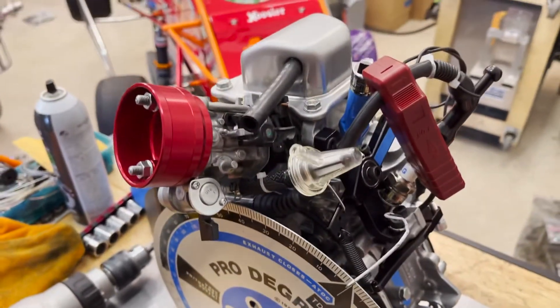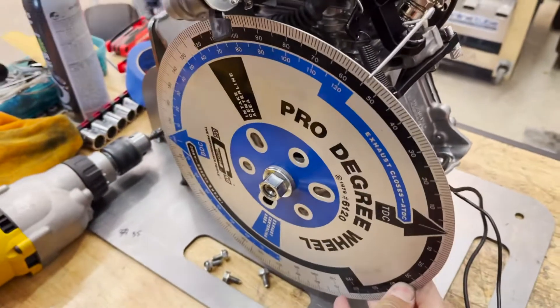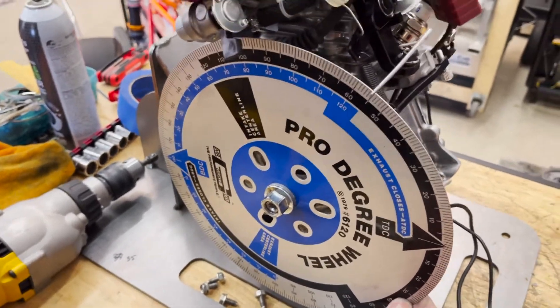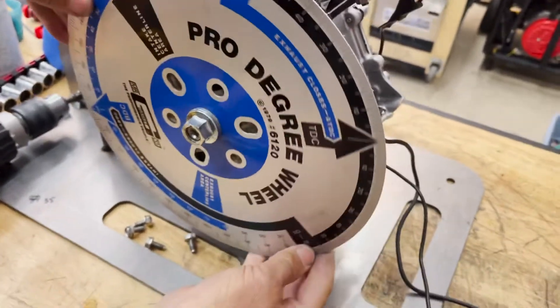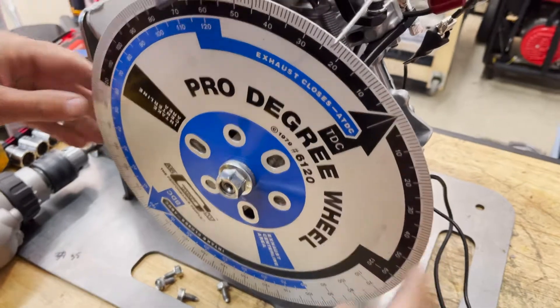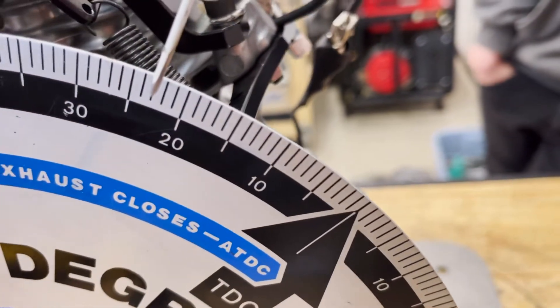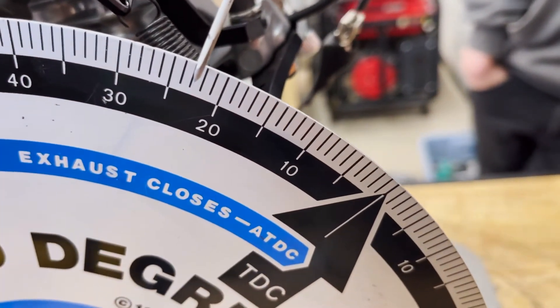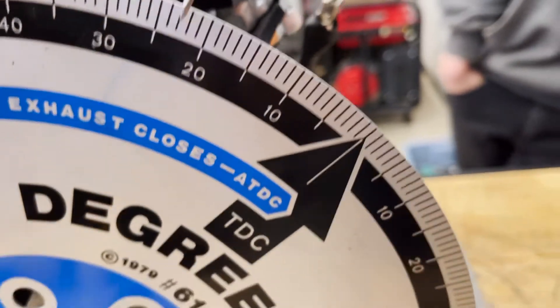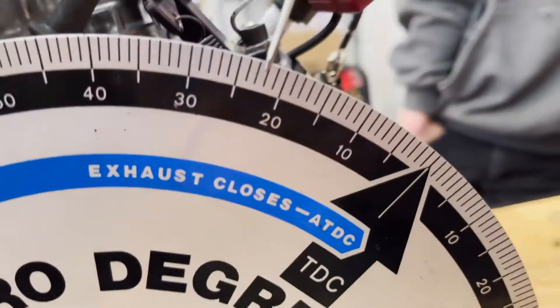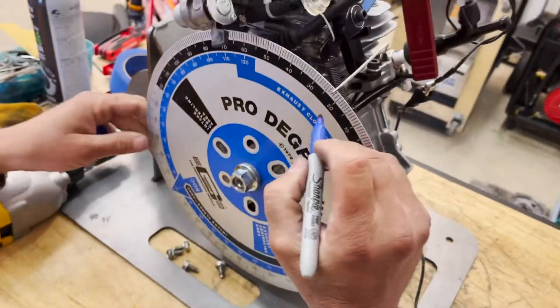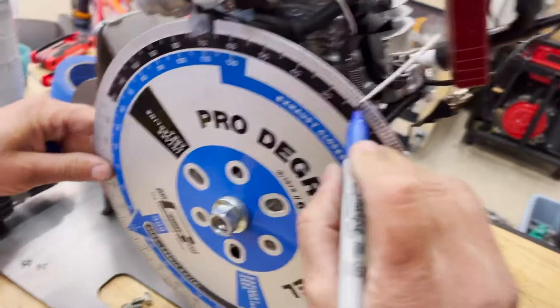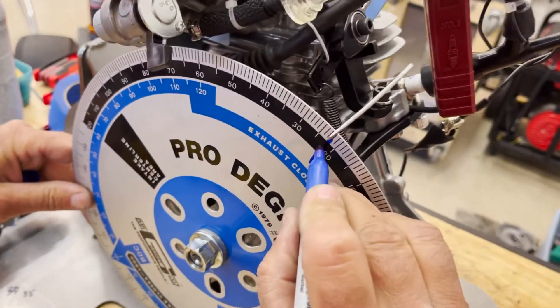Now we've got our piston stop in the hole. What the piston stop does is it allows us to go back and forth and average the numbers to find top dead center. Right there, it's coming up at, let's see, what is that, 21, two and a half? 22. 22 on the one side. So, we're going to mark it with a marker. Mark it all the way down so they can see it.